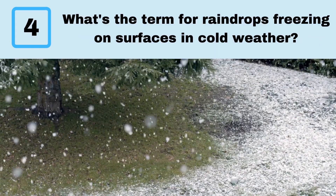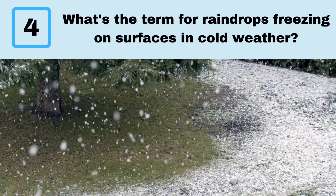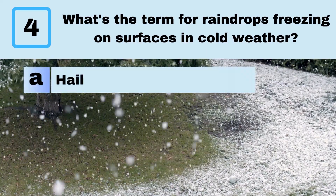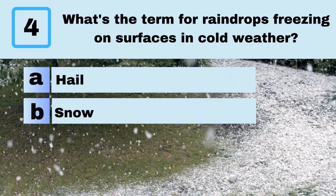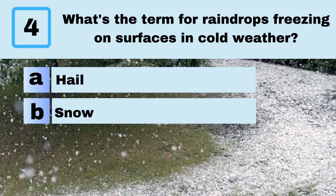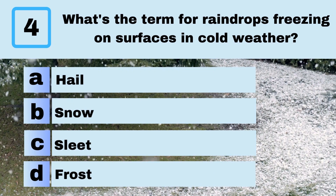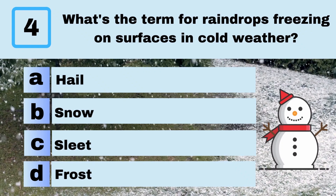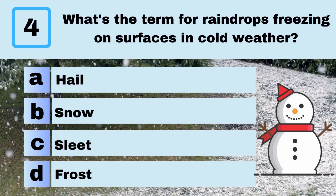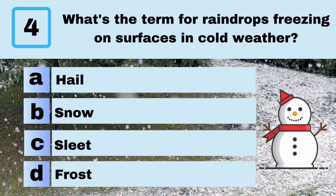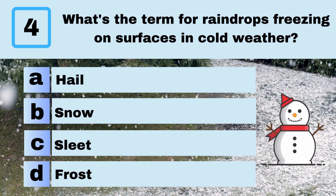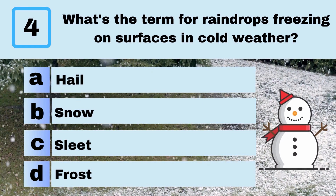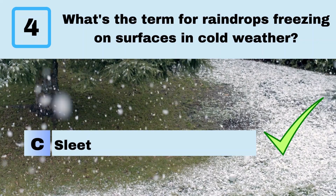Question 4. What's the term for raindrops freezing on surfaces in cold weather? A. Hail. B. Snow. C. Sleet. D. Frost. Answer: C. Sleet.